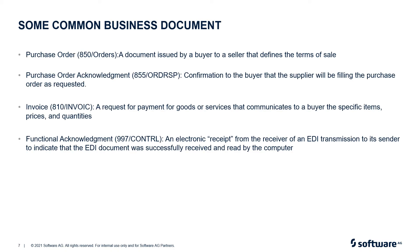Let me now quickly walk you through some of the common business documents. 1. Purchase order: a document issued by a buyer to a seller that defines the terms of sales under which the buyer will purchase the seller's goods. 2. Purchase order acknowledgement: a confirmation to the buyer that the supplier will be filling the purchase order as requested. 3. Invoice: a request for payment for goods or services that communicates to a buyer the specific items, prices and quantities. 4. Functional acknowledgement, often referred to as an FA: an electronic receipt from the receiver of an EDI transmission to its sender to indicate that the EDI document was successfully received and read by the computer.